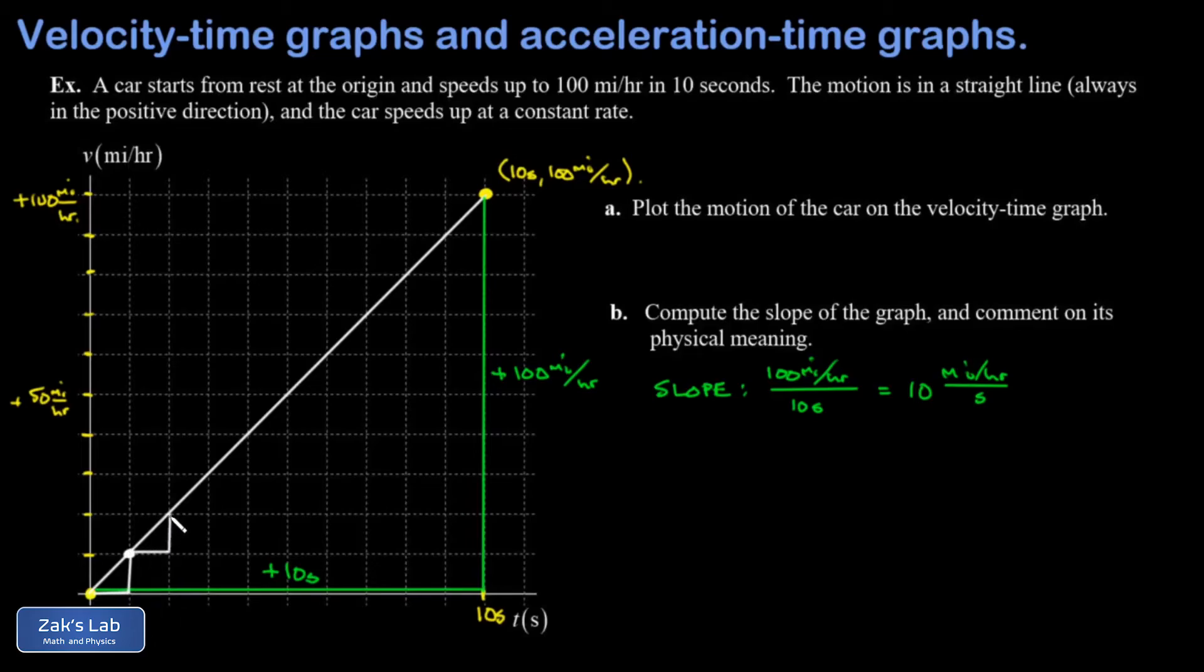After another second, it's moving 20 miles per hour. After another second, 30 miles per hour, and so on. So every time a second goes by, this thing speeds up by 10 miles per hour. And that's what 10 miles per hour per second means.